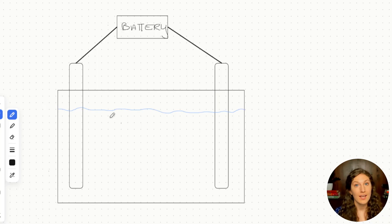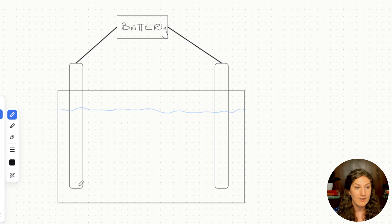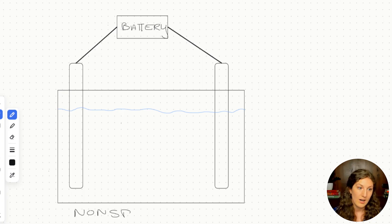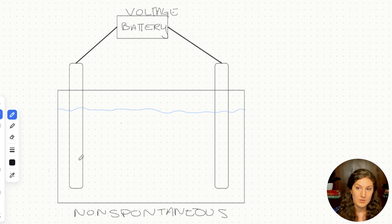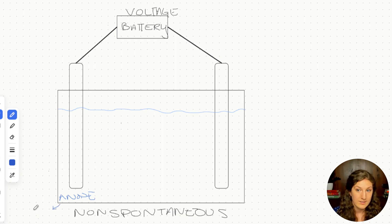Now let's briefly go through electrolytic cell features. This type is not as highly tested as galvanic cells, but it's important to know the differences. The first big difference is that it's all in one compartment — both electrodes are immersed in the same electrolyte solution. The reason we can do this is that these cells are non-spontaneous: they will not start their reactions until an external energy source, usually a battery providing voltage, is applied. The anode is still conventionally drawn on the left and is still the site of oxidation.